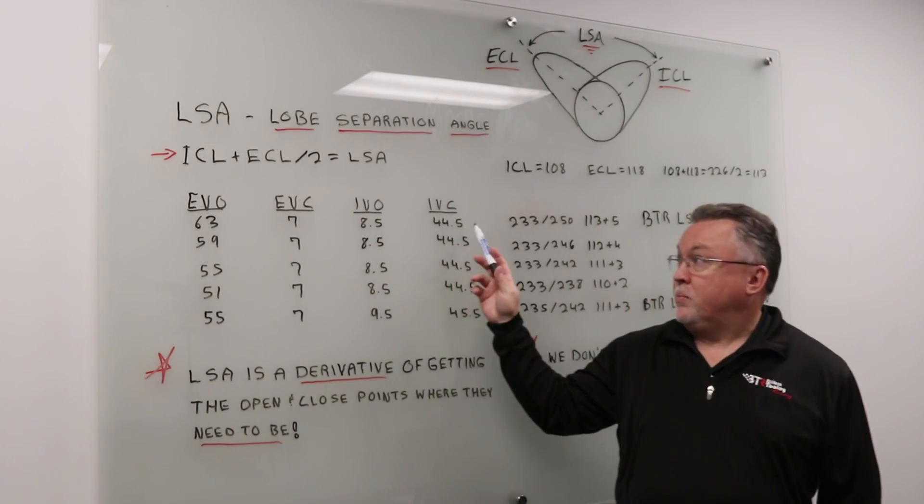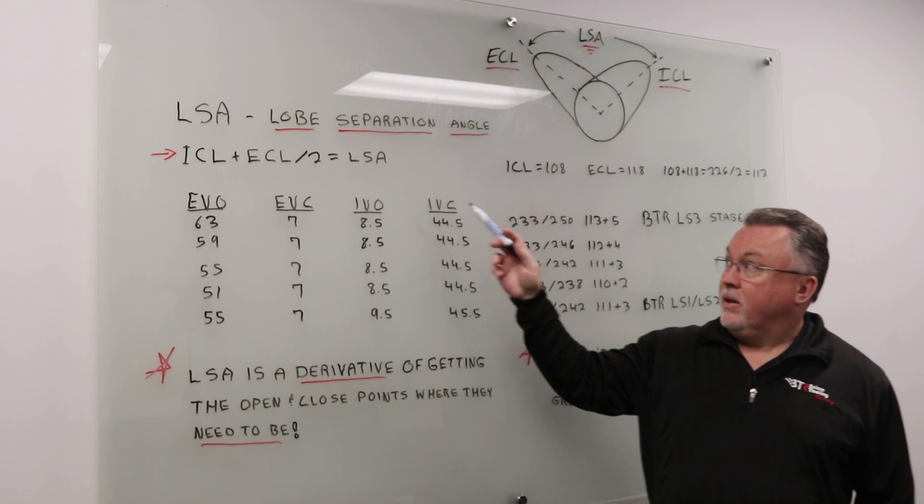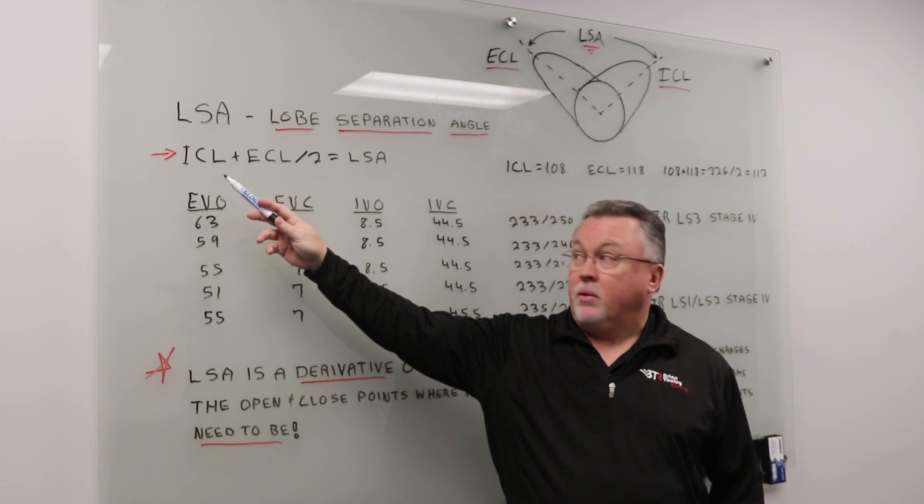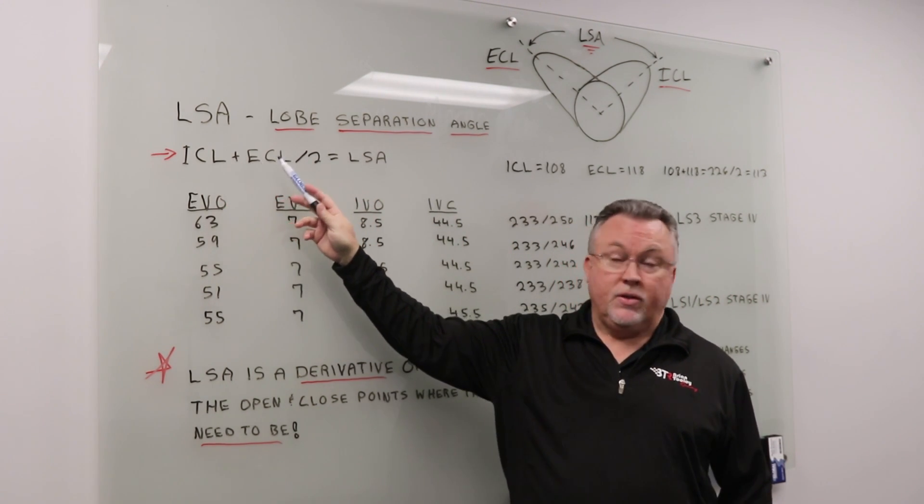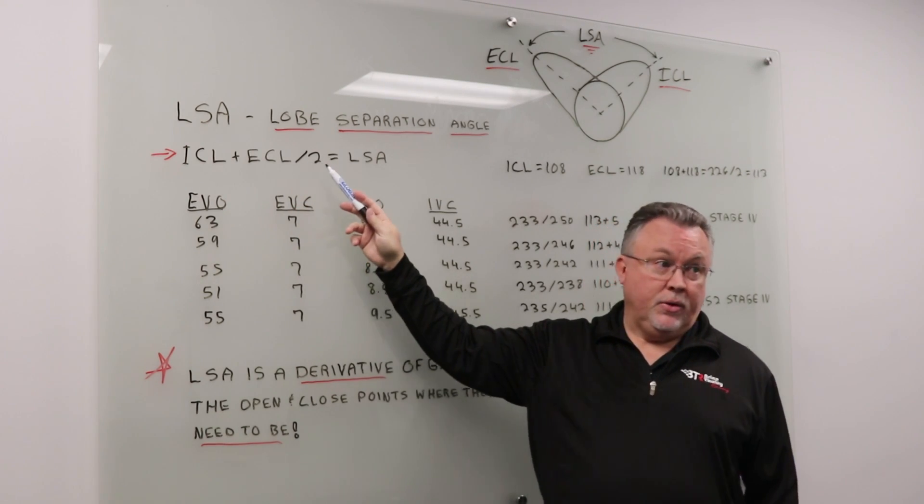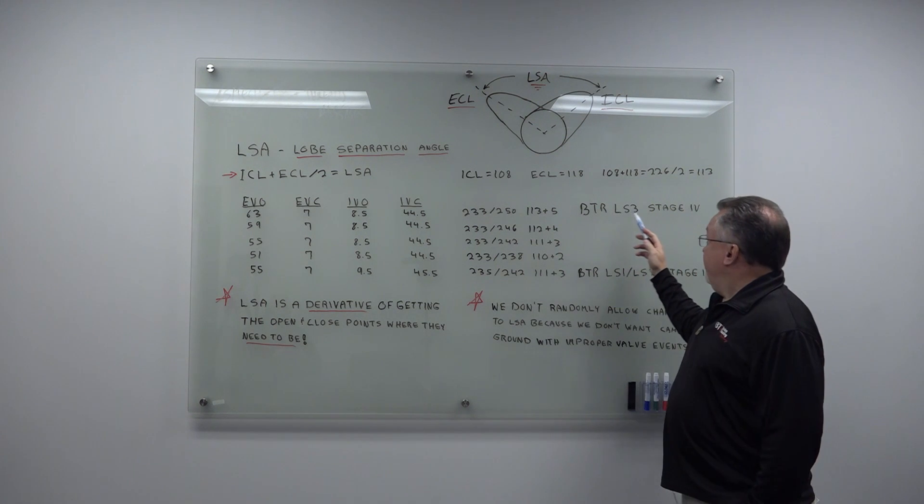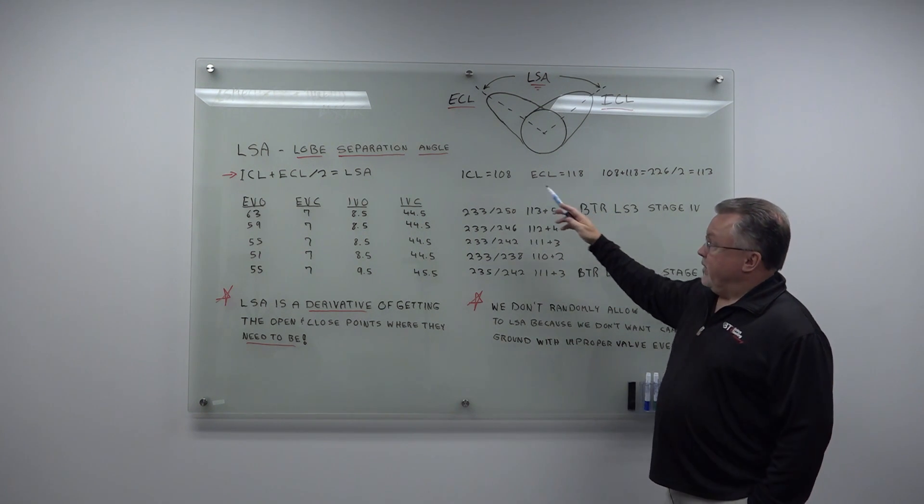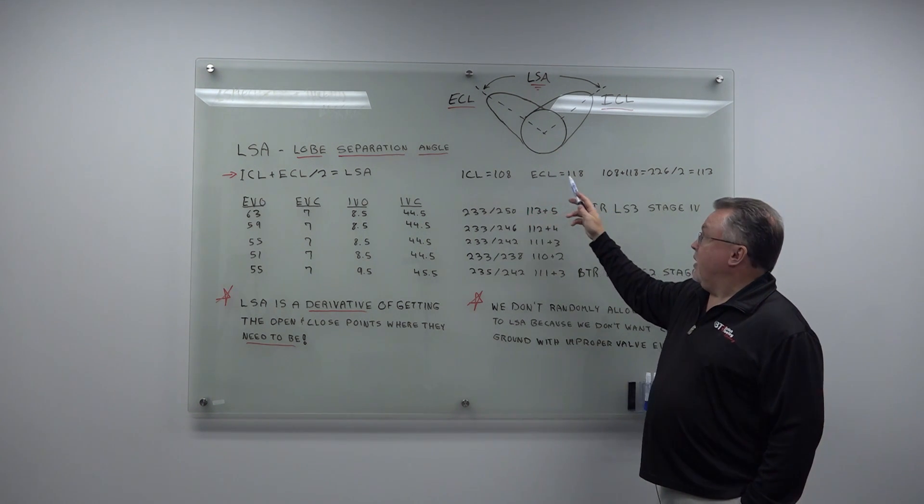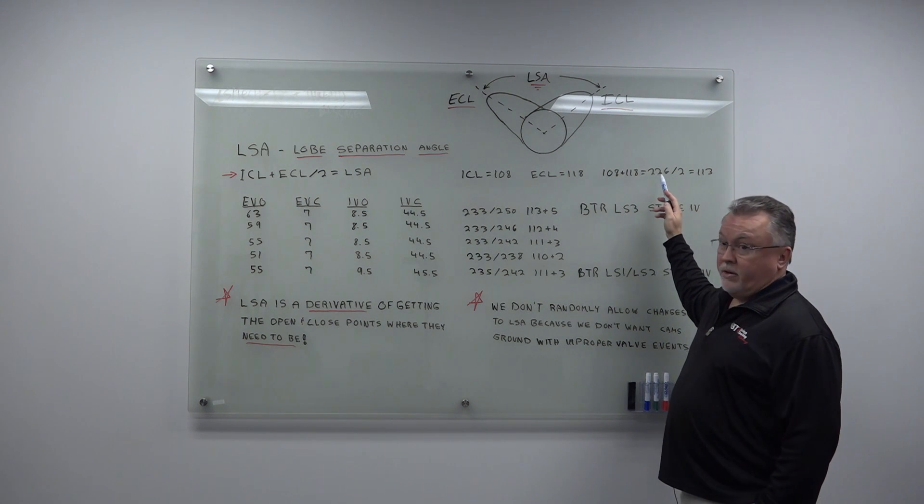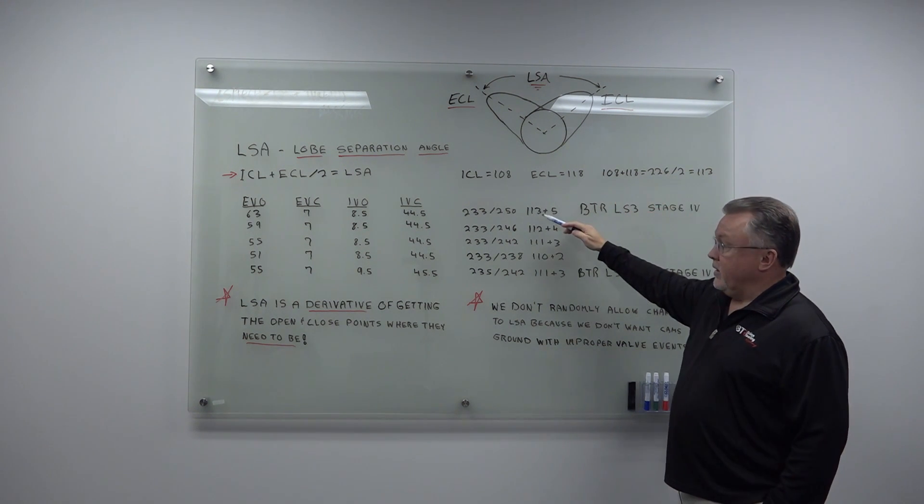The open and close points. LSA is computed by adding the intake centerline to the exhaust centerline, divided by two, and that gives you Lobe Separation Angle. Like on our Stage 4 LS3 cam, the intake centerline is 108, the exhaust centerline is 118, you add the two together, divide by two, it gives you the 113 LSA.